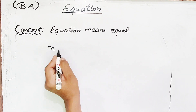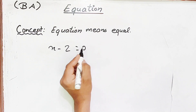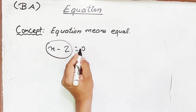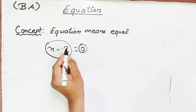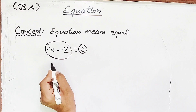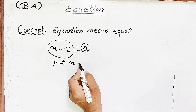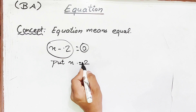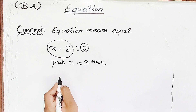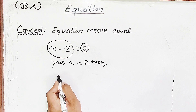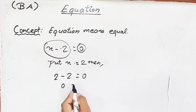Suppose x minus 2 is equal to 0. If we put x equal to 2, then 2 minus 2 is equal to 0, which satisfies the equation.